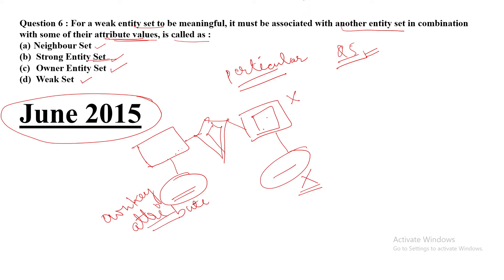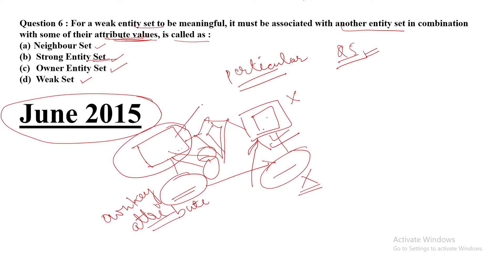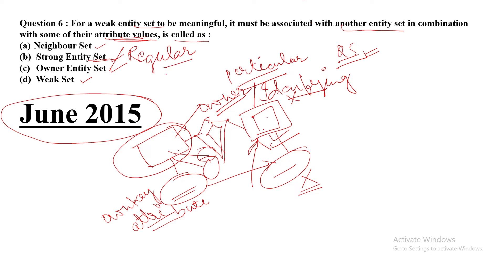If any entity set, in combination with some of its attribute values, makes the weak entity set meaningful, then that entity is called the owner entity set — also known as the identifying entity set. A strong entity set is also called a regular entity set.